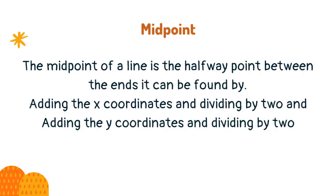The midpoint of a line is the halfway point between the ends. It can be found by adding the x-coordinates and dividing by 2 and adding the y-coordinates and dividing by 2.